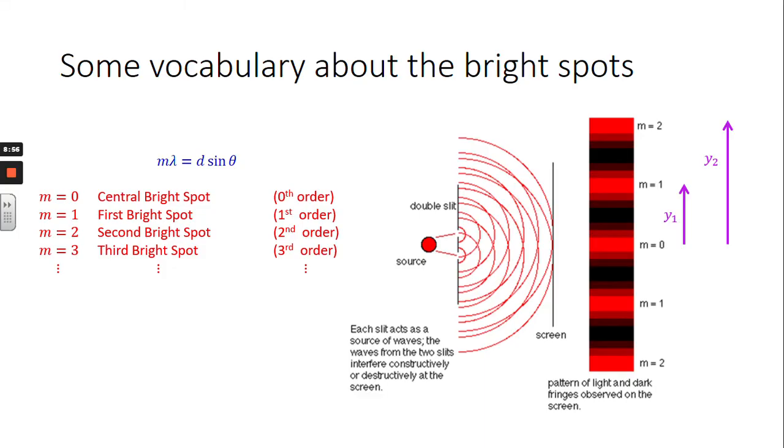Alright, so that concludes our Young's double-slit quantitative experiment. M lambda equals d sine theta, get your vertical y's here as well, when the angle is small.